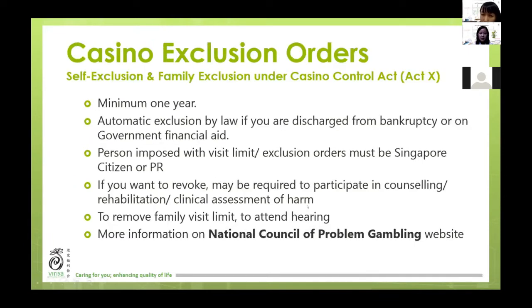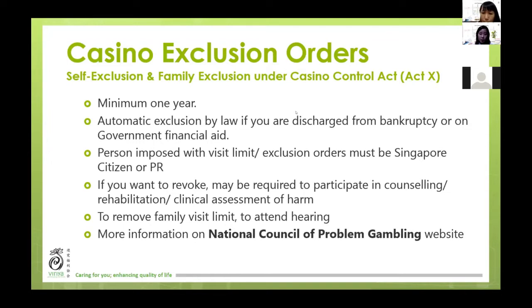There is information about the Casino Exclusion Order which may be helpful if you have family members or friends involved in problem gambling. The person can either self-exclude, or the family can exclude on their behalf — it's a minimum of one year. If the person is bankrupt or on government financial aid, there is automatic exclusion by law. If the person wants to revoke it, they may be required to participate in counselling, rehabilitation, or an assessment of whether problem gambling still exists. More information can be found at the National Council on Problem Gambling.